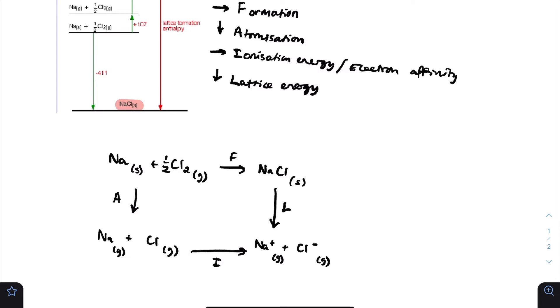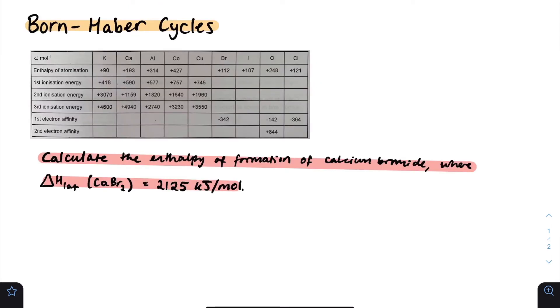Let's look at an example to apply this with actual values. We're going to calculate the enthalpy of formation of calcium bromide, where delta H_lat of CaBr2 equals 2,125 kJ per mole. When we break it up into its constituent parts, we have calcium solid plus bromine diatomic, Br2 gas.